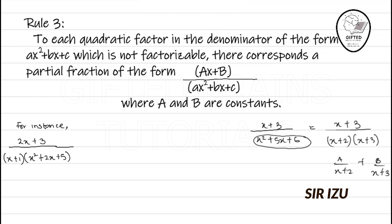But we can have another form of partial fraction where the denominator is not factorizable. For instance, consider (2x + 3) over (x + 1)(x² + 2x + 5). The first thing to do is to check whether you need to divide.